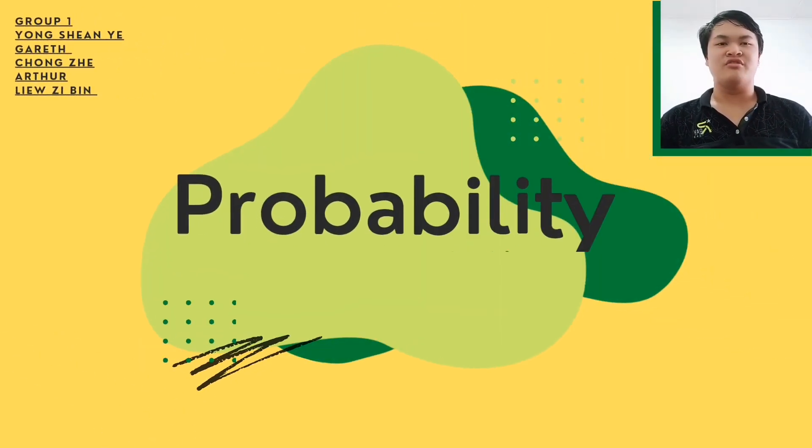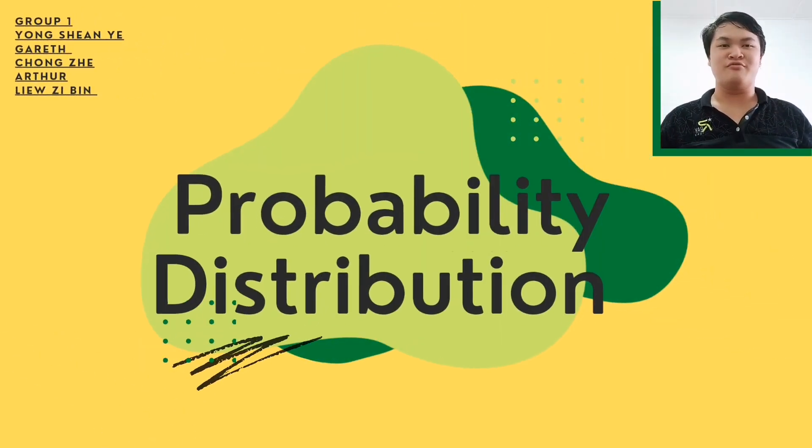Good morning to Sir Marcus and anyone watching. My group, Group 1, consists of me, Gareth, Sancter, Arthur, and Liew Zibin. We are presenting our project on probability distribution, which covers two types: discrete random variable distribution and continuous variable distribution.